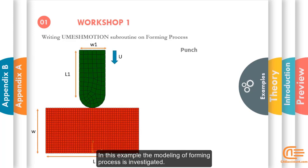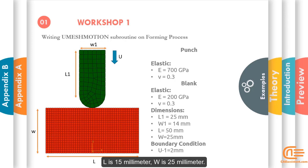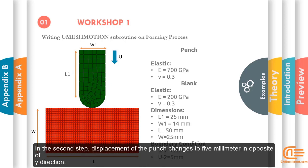In this example, the modeling of forming process is investigated. The mechanical and geometrical specifications of the punch and sheet are given below. Boundary condition should be considered in two steps. The first step, punch has only 2 mm displacement in opposite y direction. In the second step, displacement of the punch changes to 5 mm in opposite of y direction.